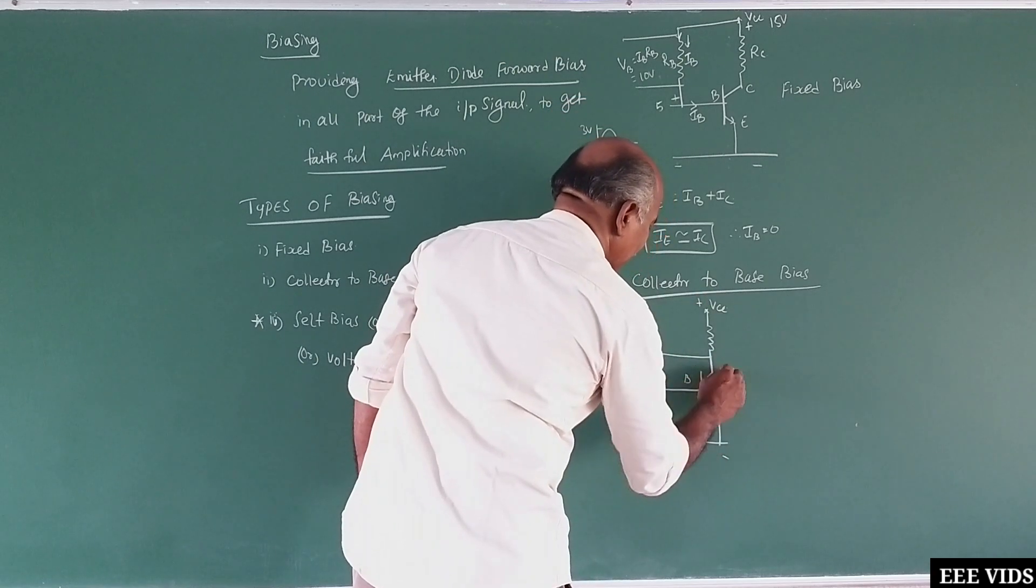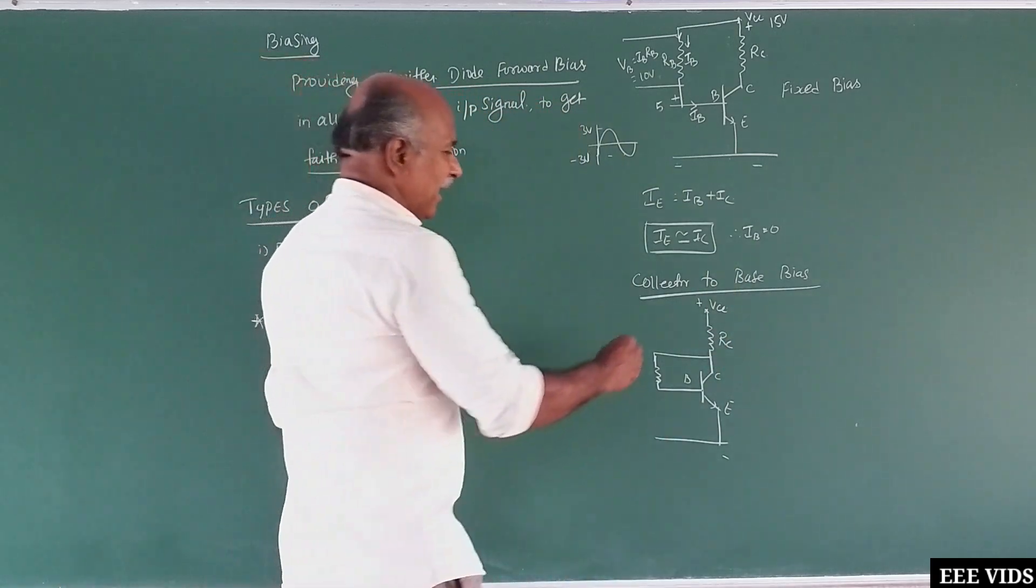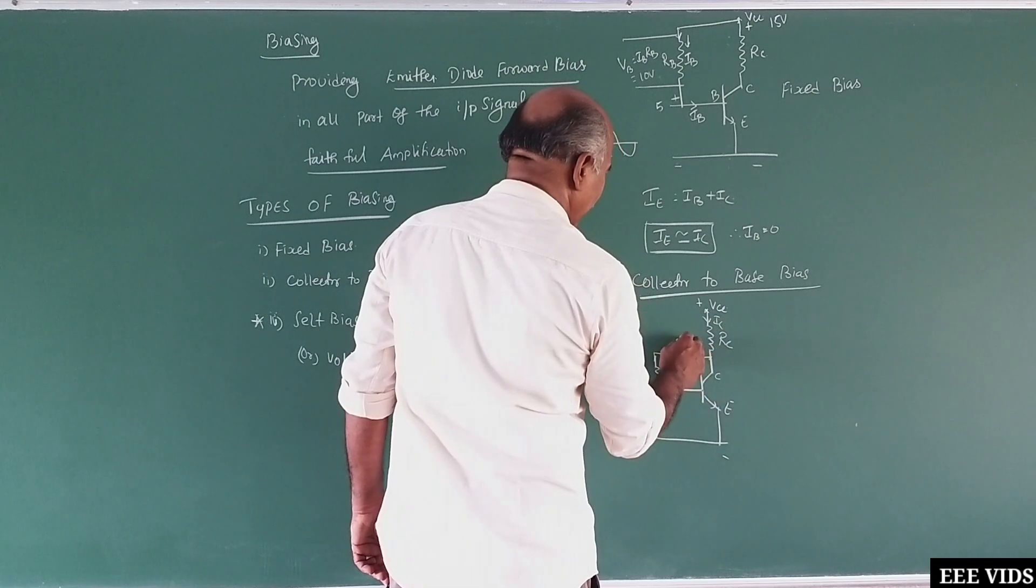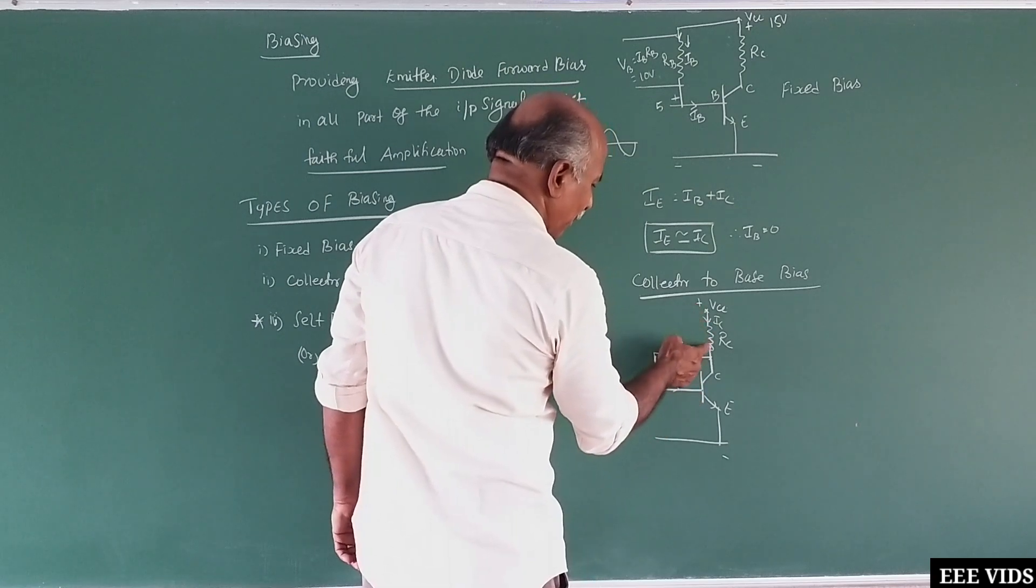Emitter, base, collector, RC. Where is current IC? In the IC, at the point, we have one point. IB up divides. Then in the IB, the collector drop goes on.